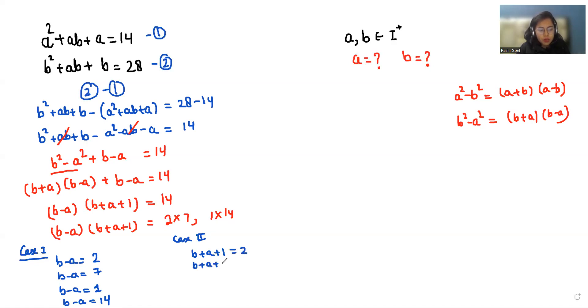Now as you already know that a and b belongs to positive integers. So this case when b + a + 1 = 14, b - a = 1, and b can't be equal to 0. It belongs to positive numbers.